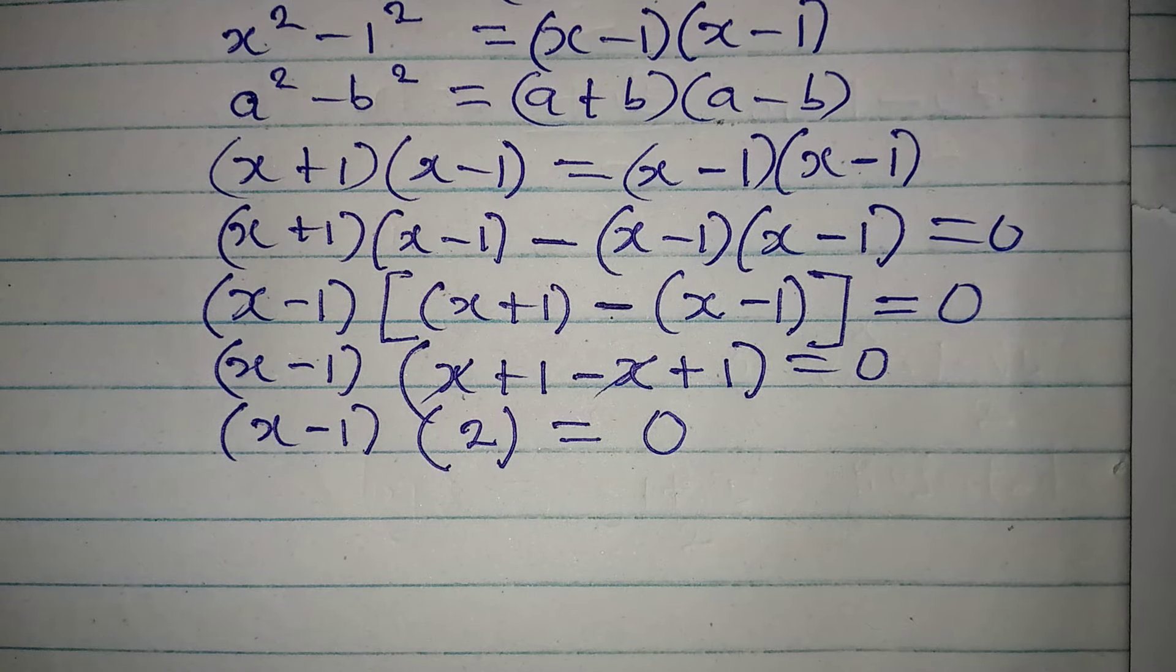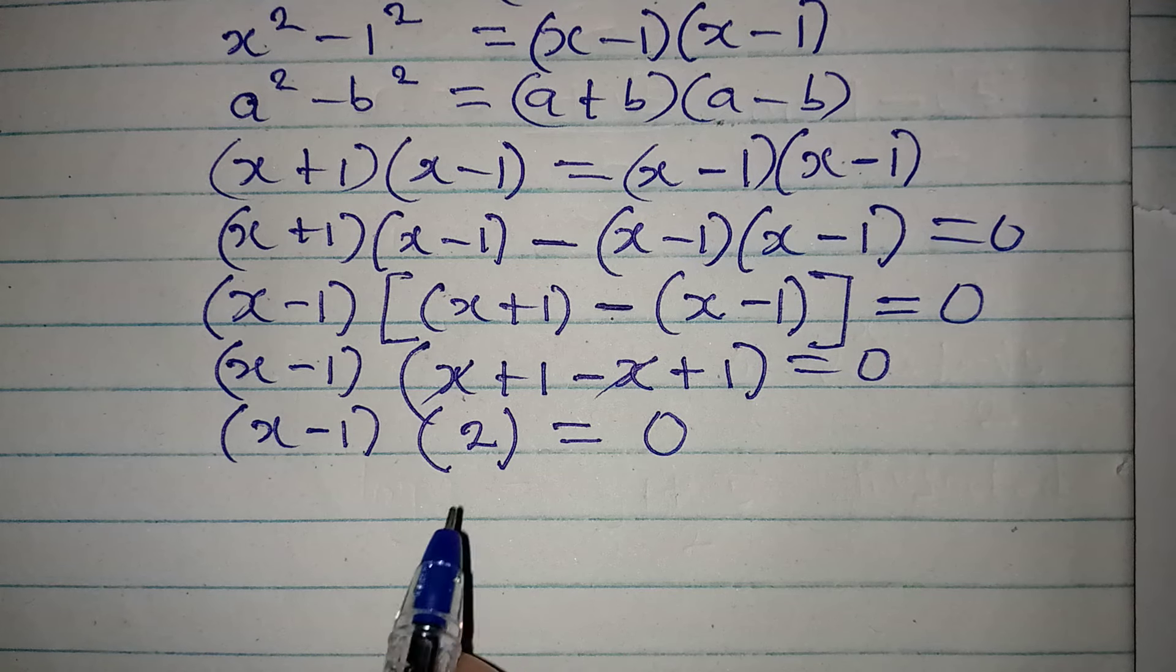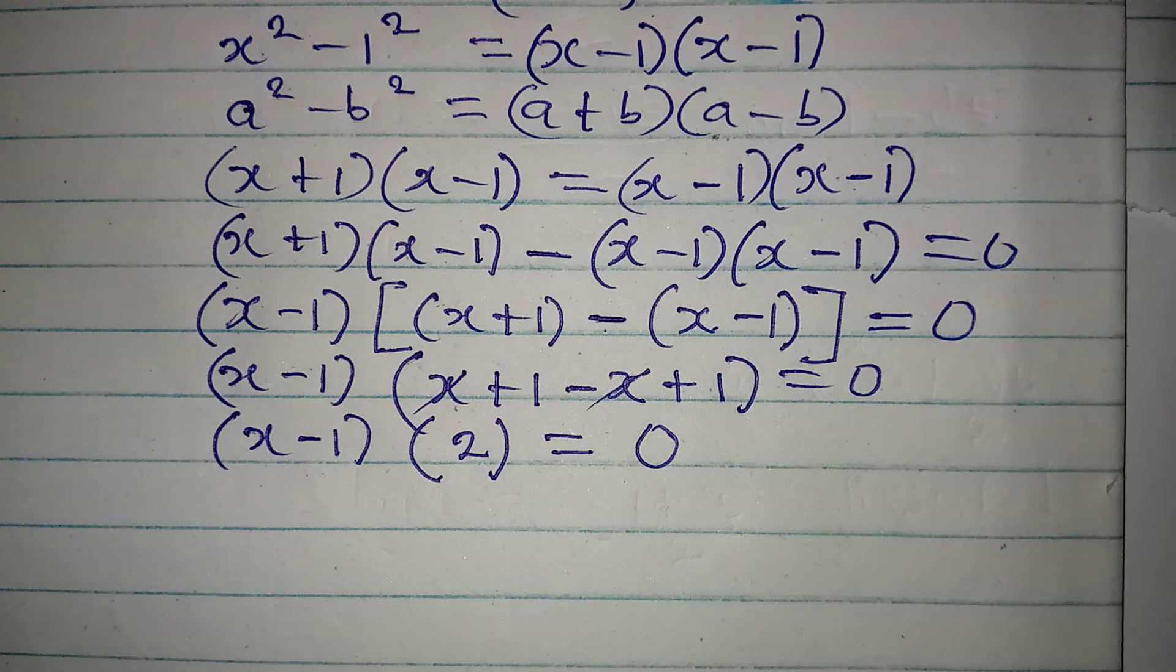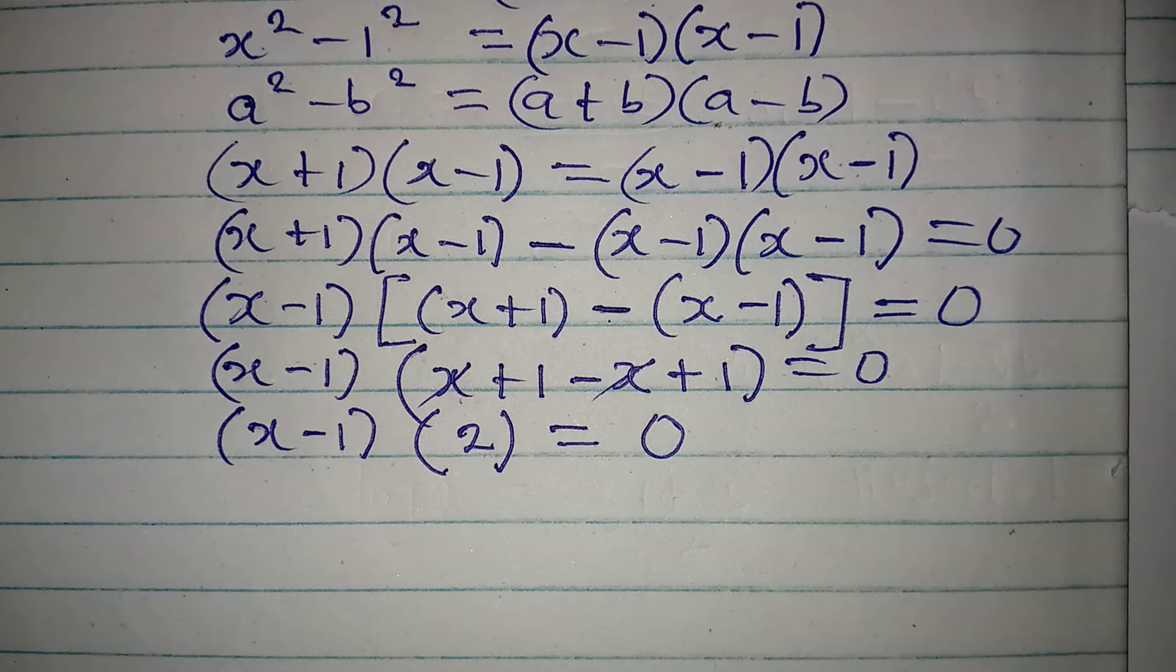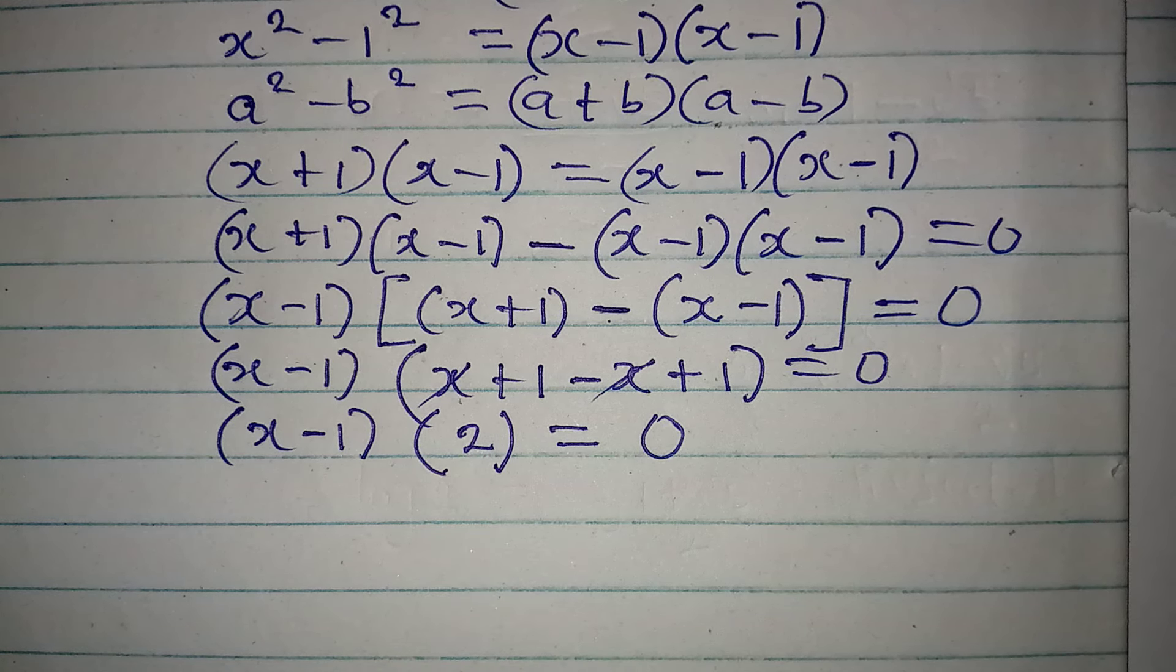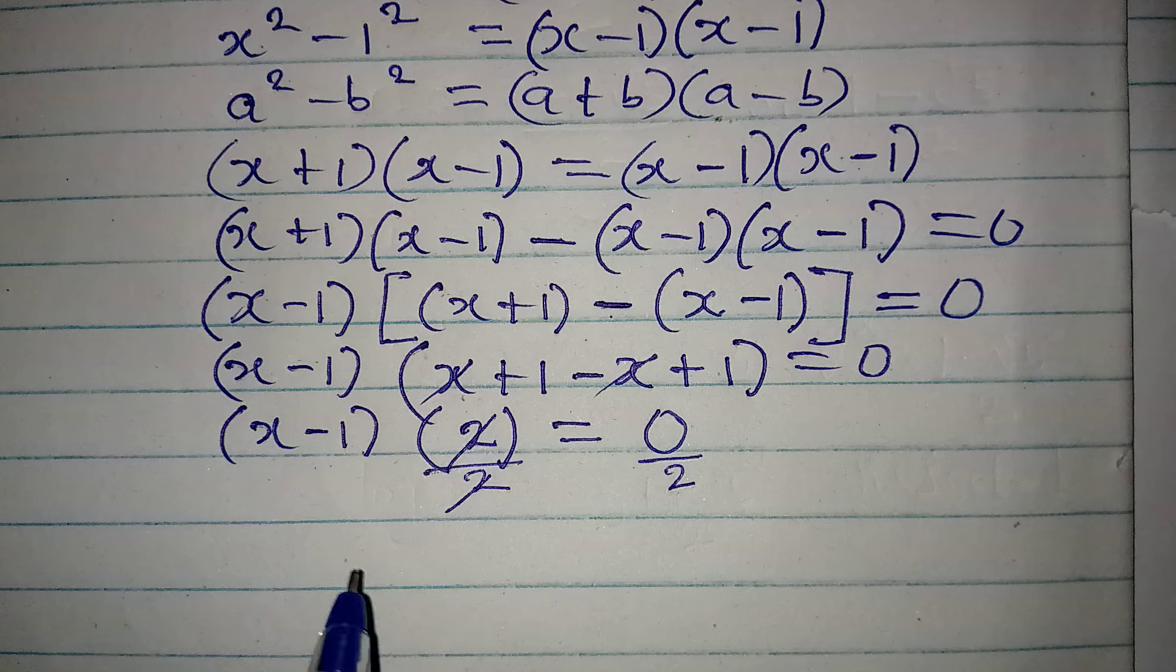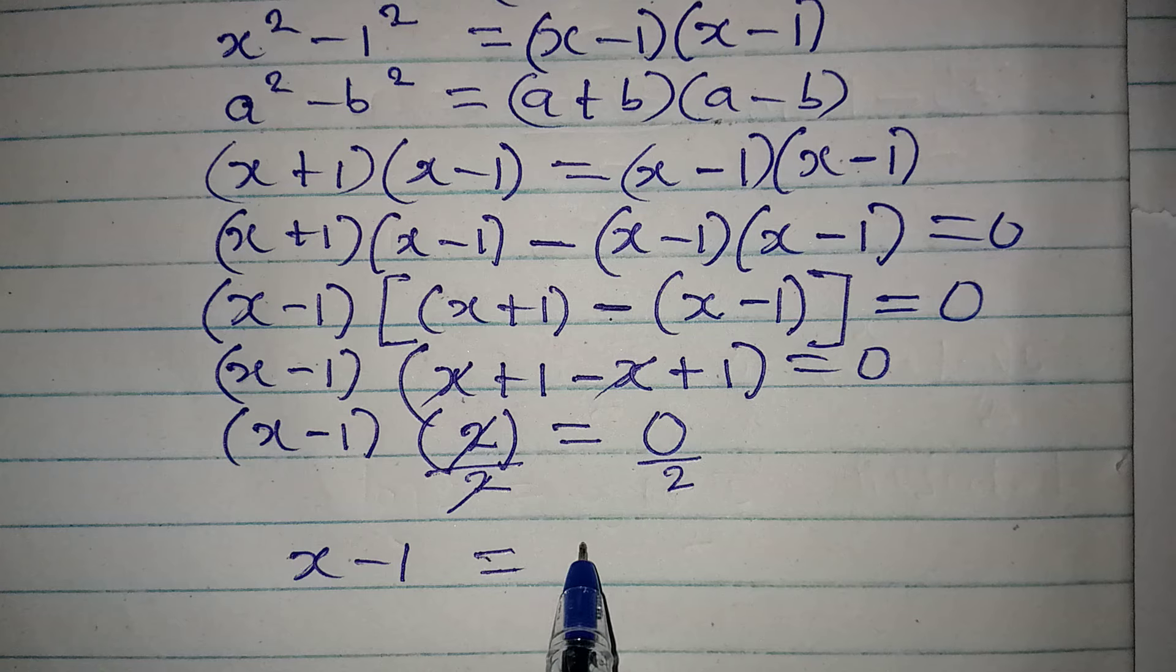This is very simple because from here we can apply our zero product property. Because when you multiply two things to get 0, then one of them must be equal to 0. We can cancel this 2 completely. One of the ways we can do that is to divide this by 2 and divide this by 2. This cancels this.